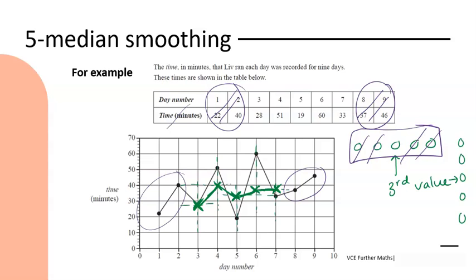That is all for a recap of median smoothing. Good news - there is no such thing as centering in median smoothing, so we only ever deal with odd groups. It is something you just need to be patient and practice - it would be good to do some past exam questions. Usually you're not doing a whole graph's worth, just a couple of points, so take your time, move through it slowly, and make sure you're not making any little errors that can creep in. Good luck.